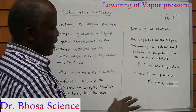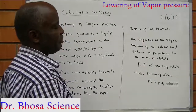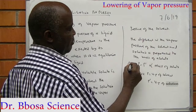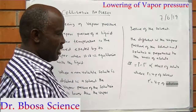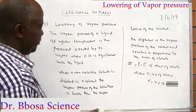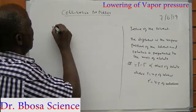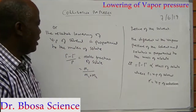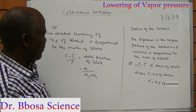So we are saying that the vapor pressure of the solvent minus the vapor pressure of the solution, given by dP, is proportional to the mass of the solute dissolved. The relative lowering of vapor pressure of a solvent is proportional to the moles of a solute, given by P minus P-dash over P.